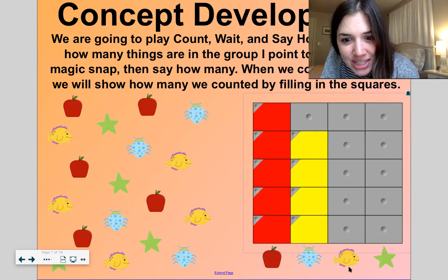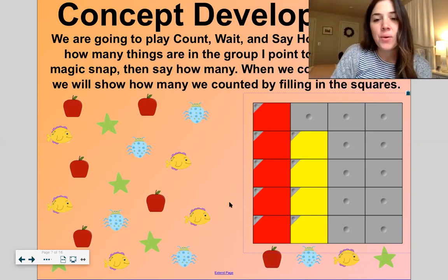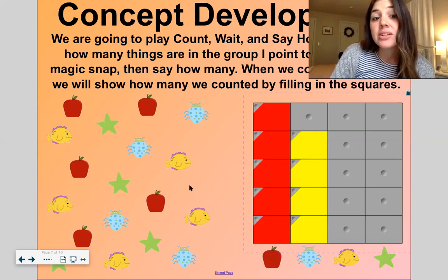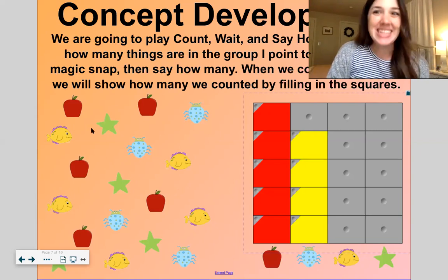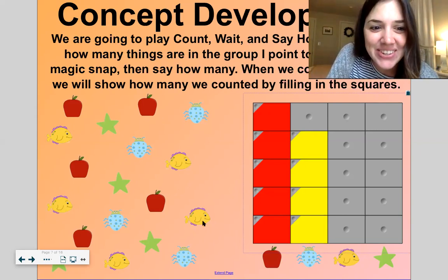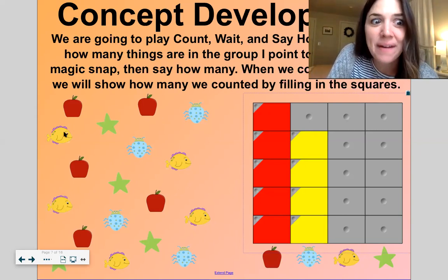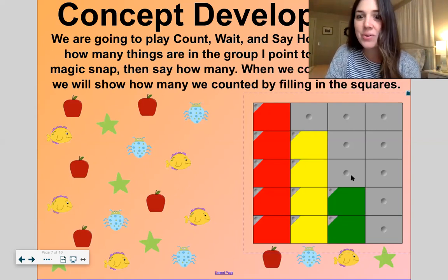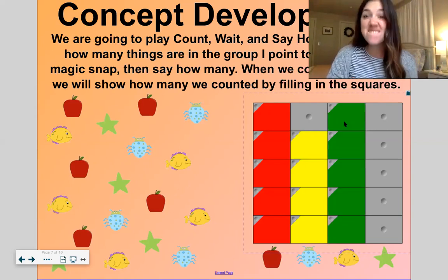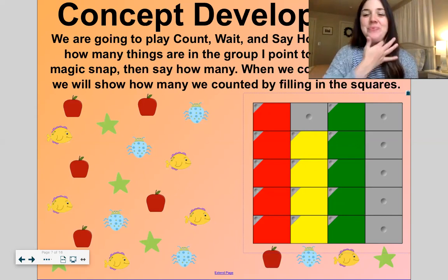Next let's count these little fish. Here we go. One, two, three, four, five. One, two, three, four, five fish.